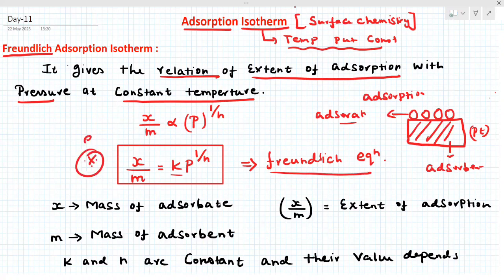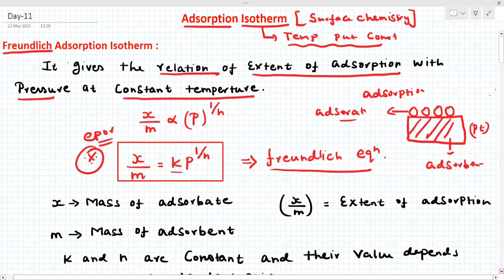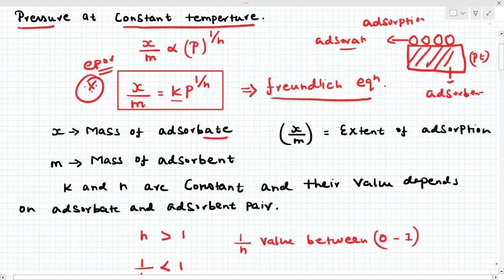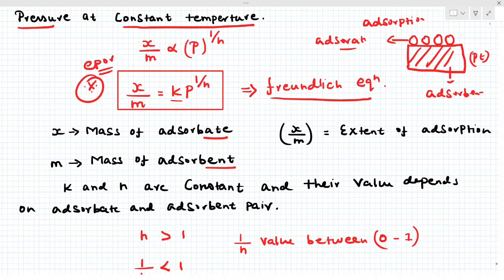This is very, very important for our exam — exam point of view. Now, what is x? x is the mass of the adsorbate. What is m? m is the mass of the adsorbent. p is pressure. k and n are constants that depend upon the adsorbent and adsorbate. So x/m is the extent of adsorption, which is directly proportional to pressure. When pressure increases, the extent of adsorption increases. That is called the Freundlich adsorption isotherm.